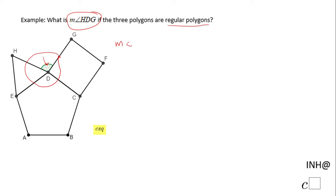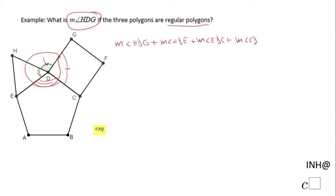So my first statement: the measure of angle HDG — which is the one we need to find — plus the measure of angle HDE, plus the measure of angle EDC, plus the measure of angle CDG, is equal to 360. We go around that point D, add all these angles, and we should get 360.